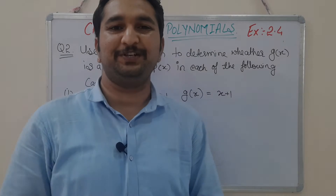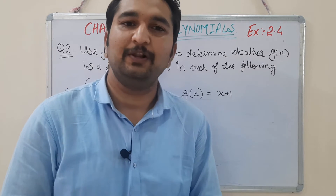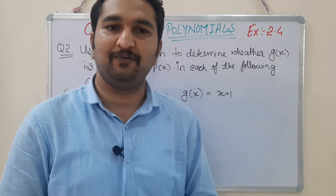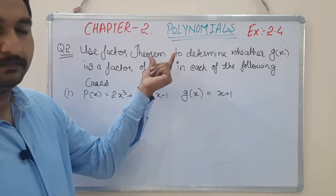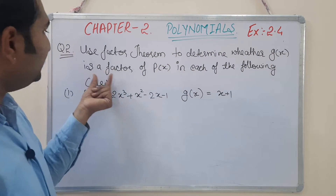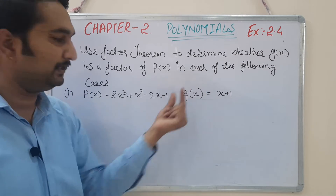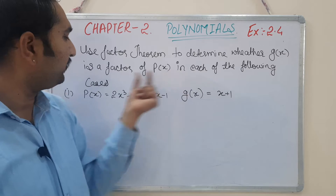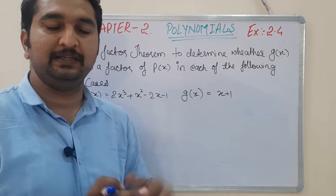Hello friends, welcome to my YouTube channel. Today I am going to solve question number 2 of exercise 2.4. It says: use the factor theorem to determine whether g(x) is a factor of p(x). The values of p(x) and g(x) are given in each of the following cases, and there are three sub-questions.